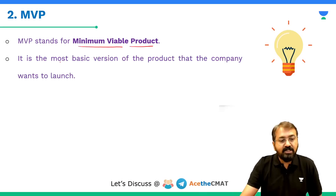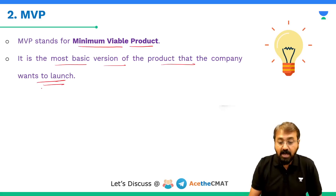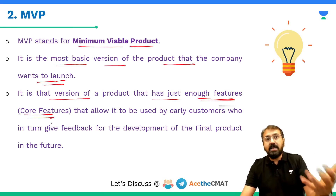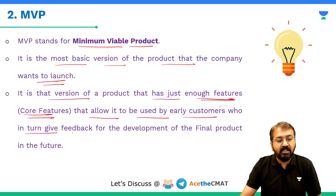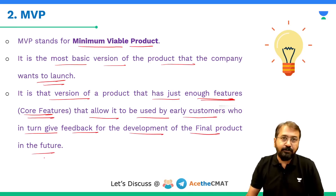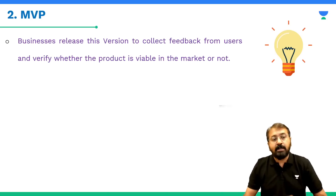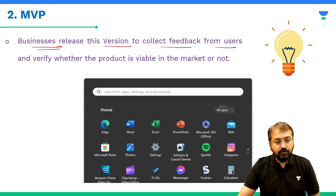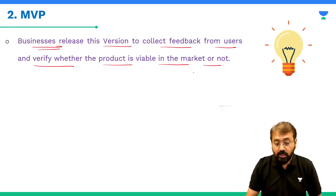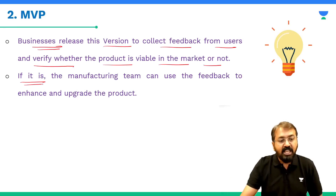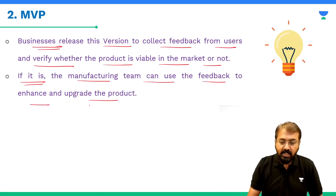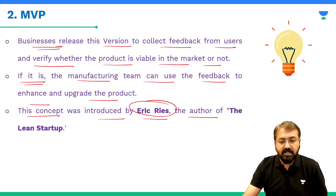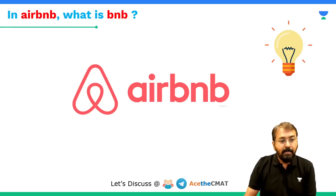What is MVP? MVP stands for Minimum Viable Product and it is the most basic version of the product that the company wants to launch in the market. It is the version of the product that has just enough core features to allow it to be used by early customers, who in turn give feedback for the development of the final product. Businesses release this version to collect feedback from users and verify whether the product is viable in the market. This concept was introduced by Eric Ries, the author of 'The Lean Startup'.